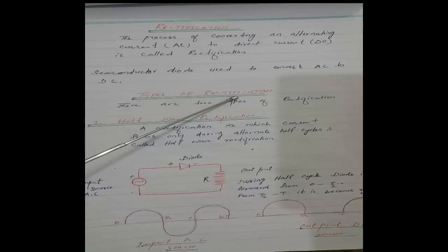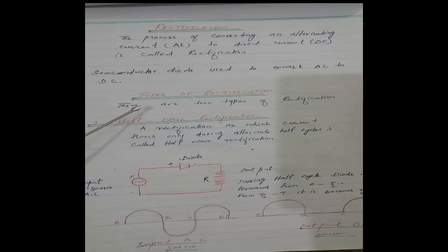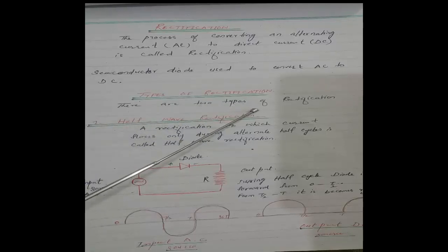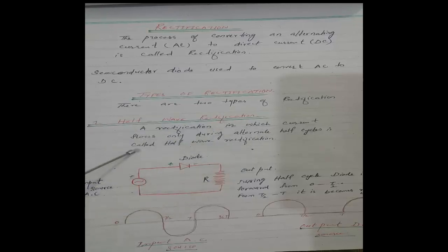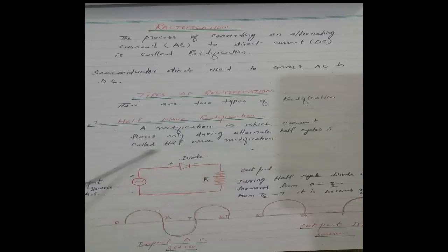Types of Rectification: there are two types. दो तरह की rectification हमारे पास आती है। Number one: Half Wave Rectification. Rectification in which current flows only during alternate half cycles is called half wave rectification.